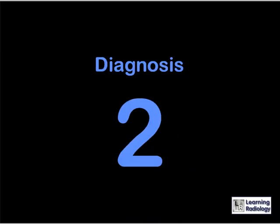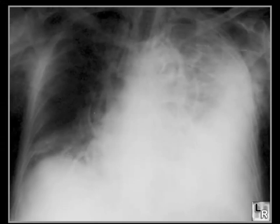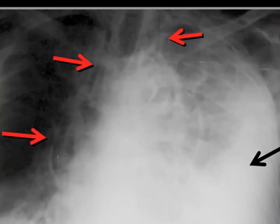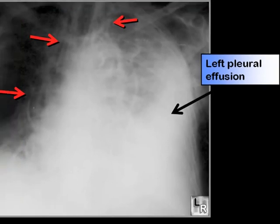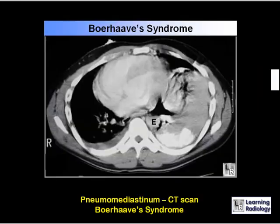This is Diagnosis 2. Why did this 43-year-old develop chest pain after vomiting? There is air in the mediastinum, as evidenced by the streaky densities indicated by the red arrows, and there is a large left pleural effusion. Whenever you have the combination of a pneumomediastinum and a left pleural effusion, especially in someone with a history of retching or vomiting, the diagnosis should be Boerhaave syndrome, or rupture of the esophagus.